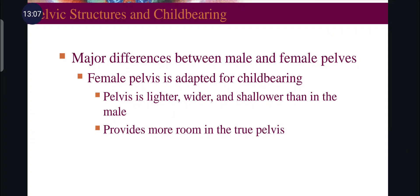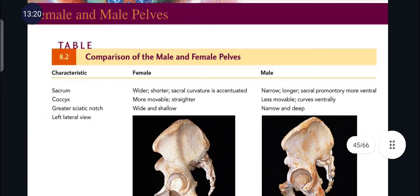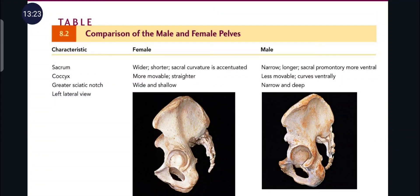Major differences exist between male and female pelvises. The female pelvis is adapted for childbearing — it is lighter, wider, and shallower than in males, providing more room in the true pelvis. In the female, the sacrum is wider and shorter with accentuated sacral curvature, while in the male it is narrower, longer, with the sacral promontory more ventral, less movable, and curving ventrally.